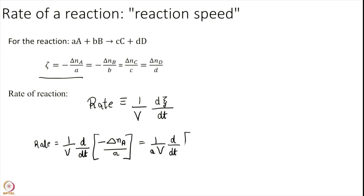And what is the definition of delta N A. It is N A minus N A naught. So this is equal to 1 over a V minus d N A over d T plus d N A naught over d T.